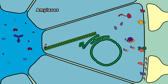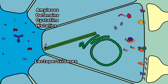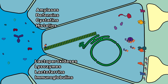Salivary proteins released include mucins, amylases, defensins, cystatins, histatins, lactoperoxidases, lysozymes, lactoferrins, and immunoglobulins. Some of them begin digestion by breaking down monomers of polysaccharides, others function as biological weapons against bacteria, viruses, and fungi, and others serve to lubricate food.